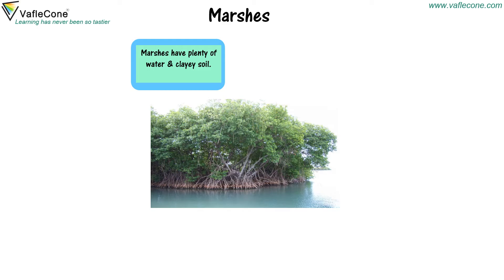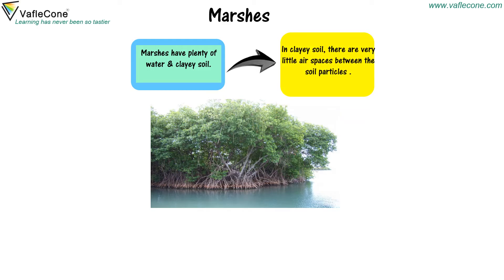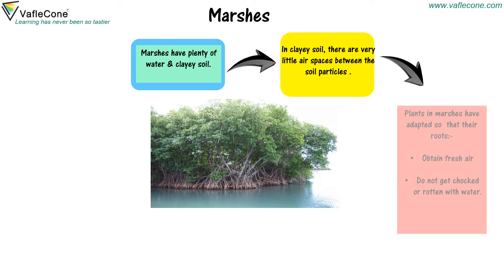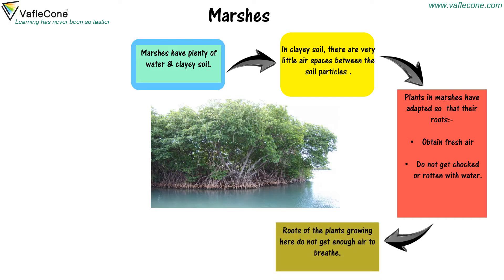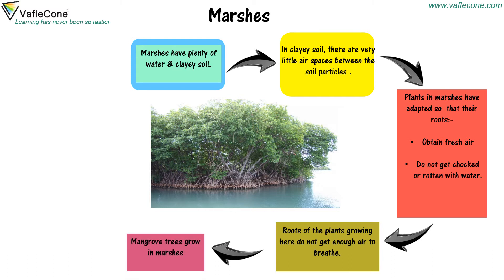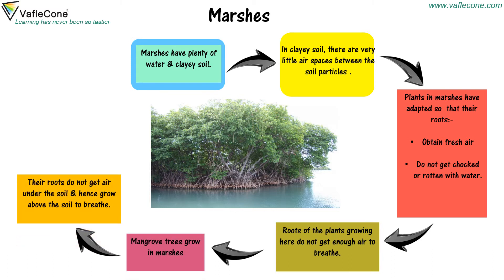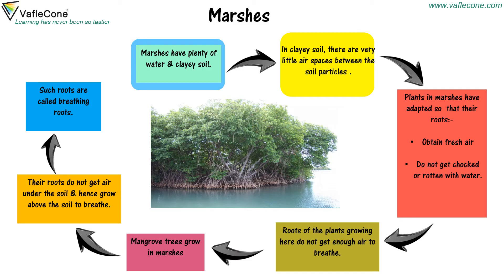Marshes have plenty of water and clay soil. In clay soil, there are very little air spaces between the soil particles. Plants in marshes have adapted so that their roots can obtain fresh air and do not get choked or rotten with water. Mangrove trees grow in marshes. Their roots do not get air under the soil and hence grow above the soil to breathe. Such roots are called breathing roots.